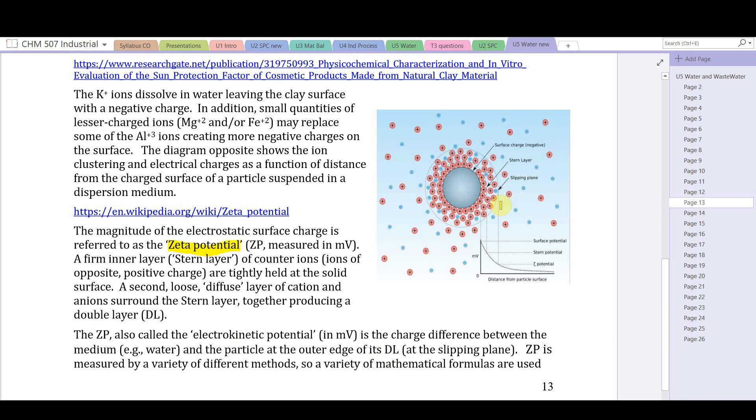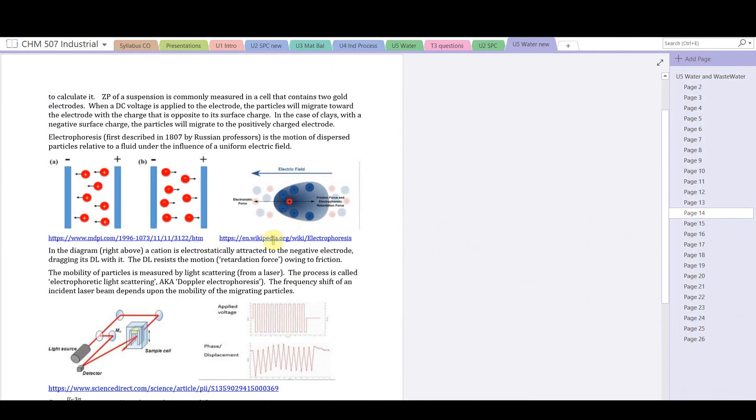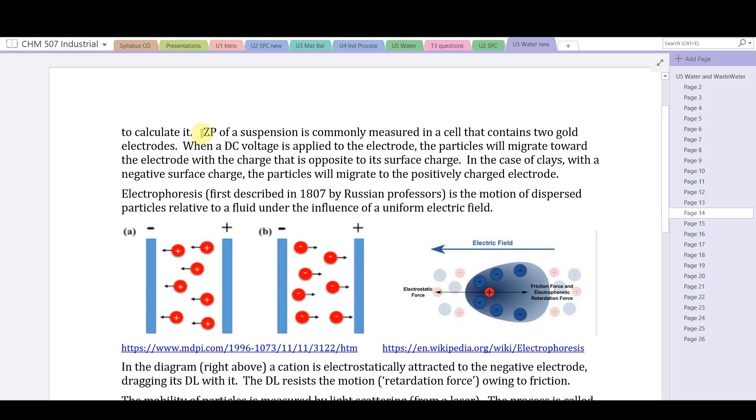Zeta potential is measured by a variety of different methods, so a variety of different mathematical formulas are used. The zeta potential of a suspension is commonly measured in a cell that contains two inert electrodes (gold or platinum). A DC voltage is applied to the electrode and the particles will migrate toward the electrode with the charge opposite to the surface charge. In the case of clays with a negative surface charge, the particles will migrate to the positively charged electrode, the anode. This process is called electrophoresis. Electrophoresis was first described in 1807 by a Russian professor. It's the motion of dispersed particles relative to a fluid under the influence of a uniform electric field.